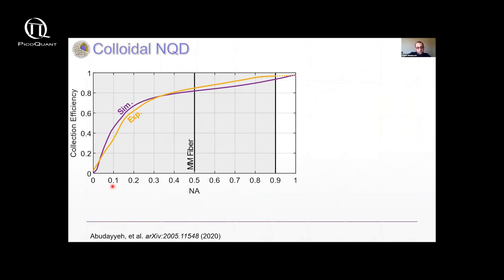Now, if we integrate this image, what we get eventually is the collection efficiency. What is the percentage of photons that you can collect into any given NA? And this is what I'm showing you here.